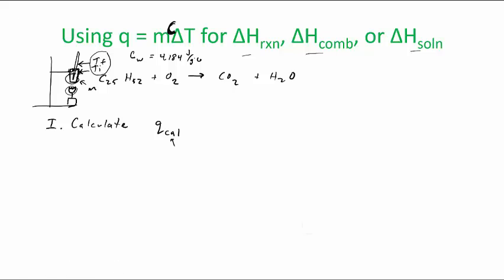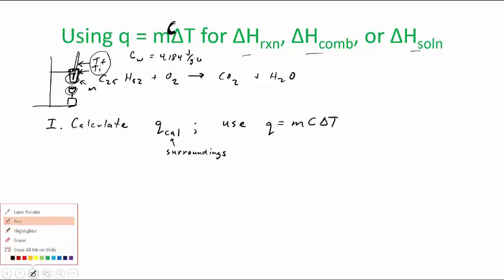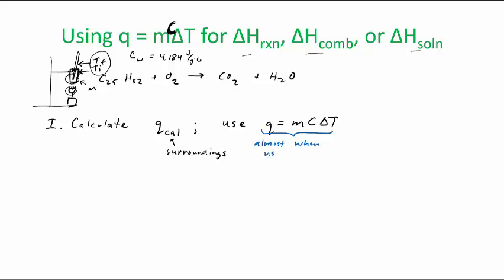Part of the calorimeter is actually the soda can itself, the aluminum. So that's why we don't necessarily call it the heat of the water. We're going to say Q of Cal. And Cal represents the calorimeter, which includes all of the surroundings. So that's the first step, is we're going to use that, and use the heat equation to do that. So we use Q equals MC delta T. And this is for, this is almost always when you're using water.